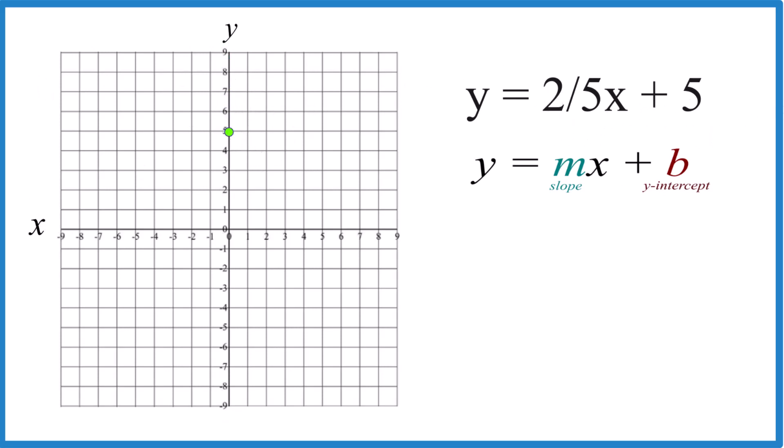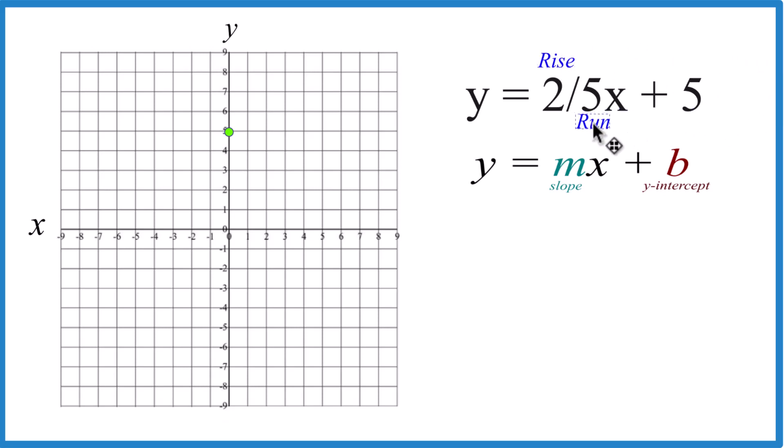For the 2 fifths x, let's call that rise over run. So we're going to rise 2, run 5.